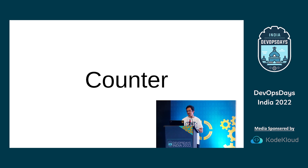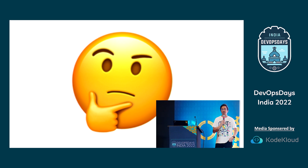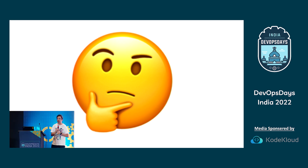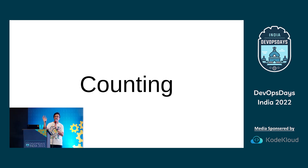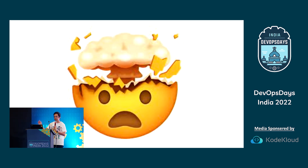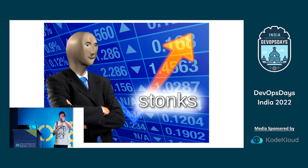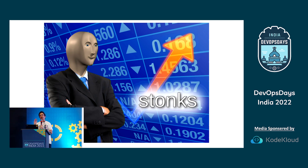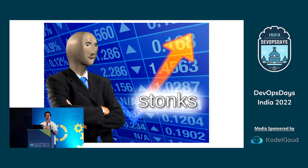Counter. The name isn't really very intuitive, is it? Some of you may be wondering what a counter is used for. Well, a counter is used for — and you are not going to believe this — counting. The thing about a Prometheus counter is it can only increase in value, unlike cryptocurrency. I meant NFTs. You can increase a Prometheus counter either by one, or by any particular number you want. The important thing to note is that when the process the counter is running for restarts, the counter will also get reset to zero.